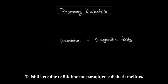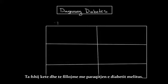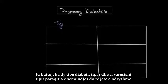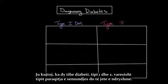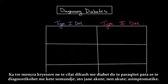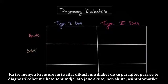Let's start with the presentation of diabetes mellitus. Recall there are two types of diabetes, type one and type two, and depending on the type, the disease presentation will differ. There are three main ways in which someone with diabetes will present before they're diagnosed: acute, subacute, and asymptomatic.